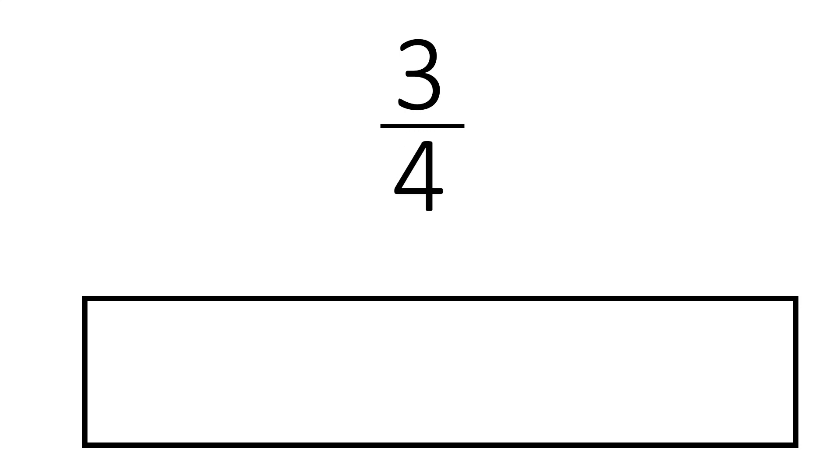Here, the bottom number, or the denominator, shows us we have four equal parts. And the top number, the numerator, tells us how many out of those four we have. In this case, three out of four, or three quarters.